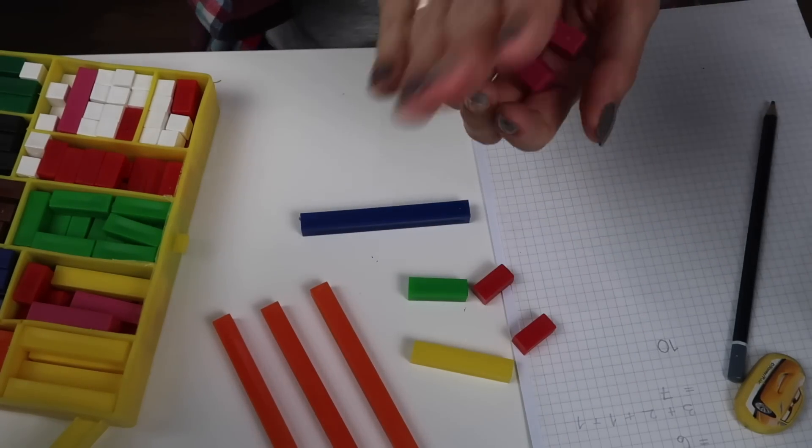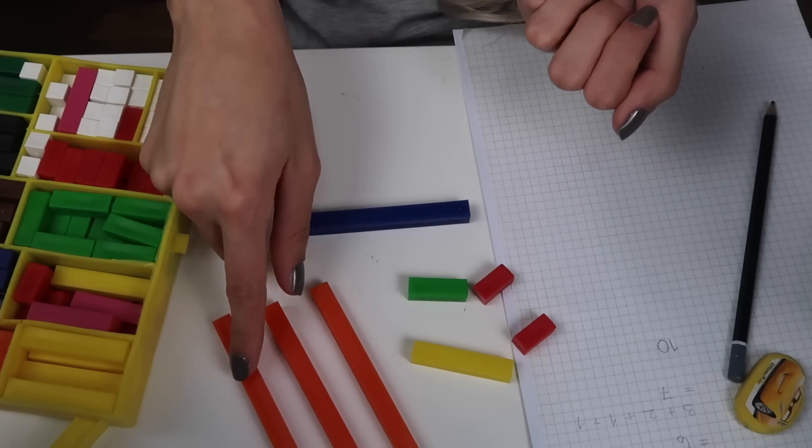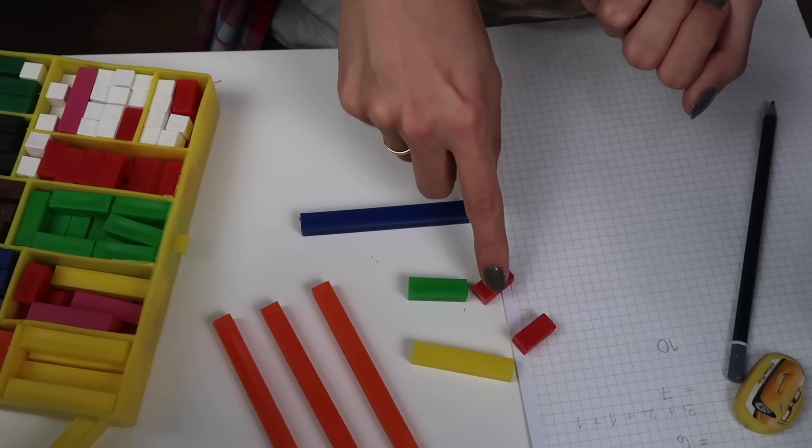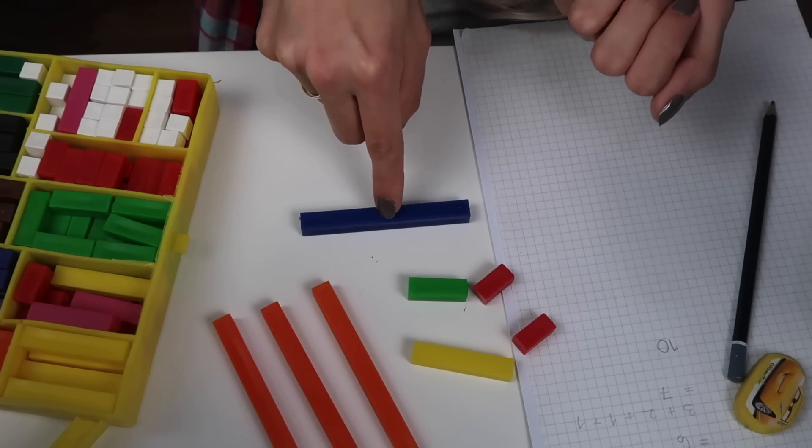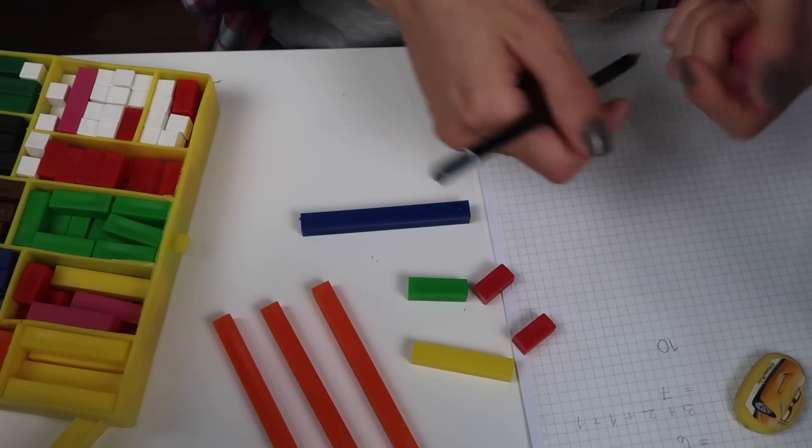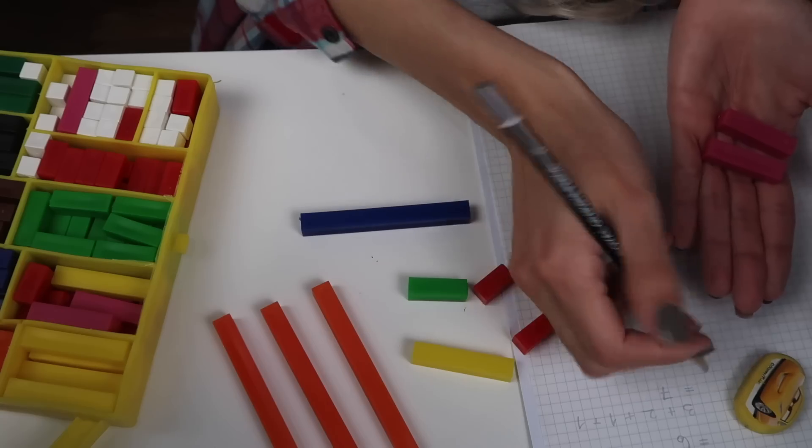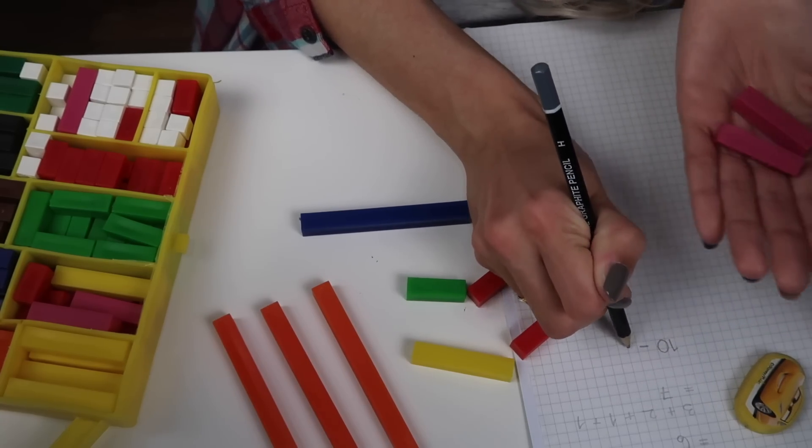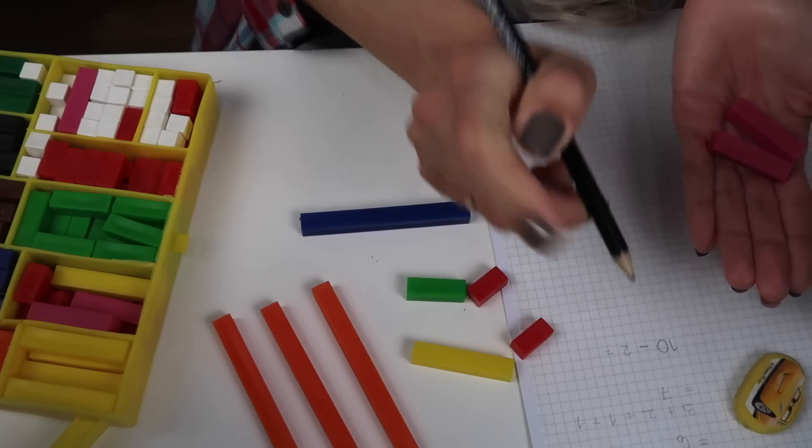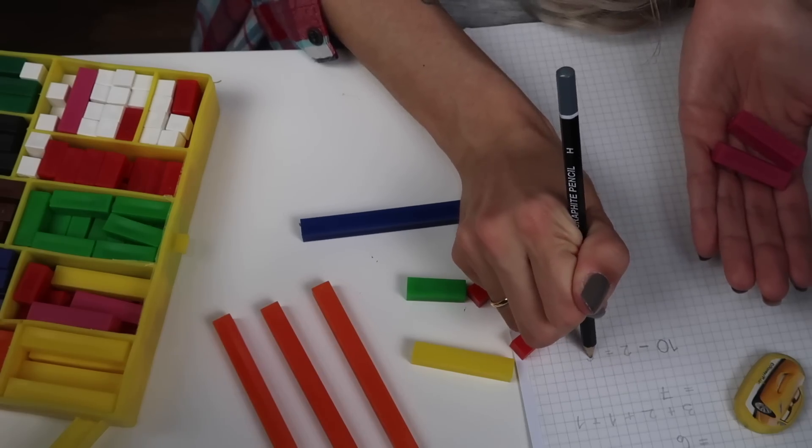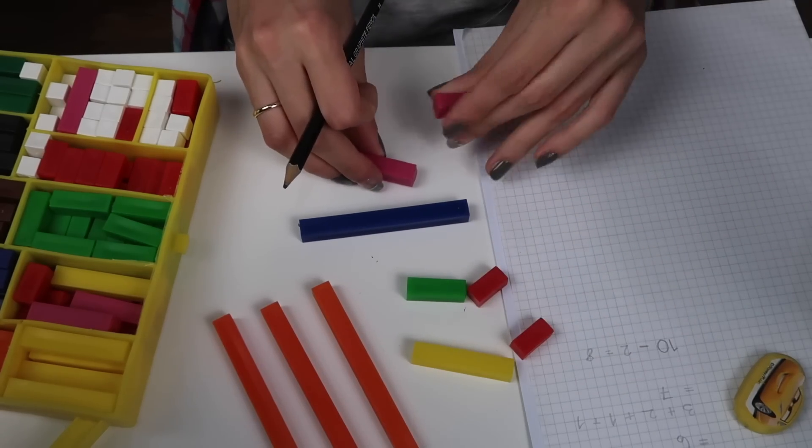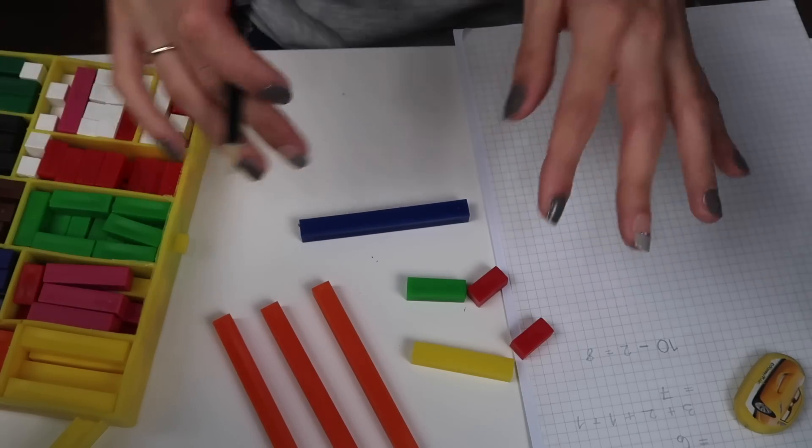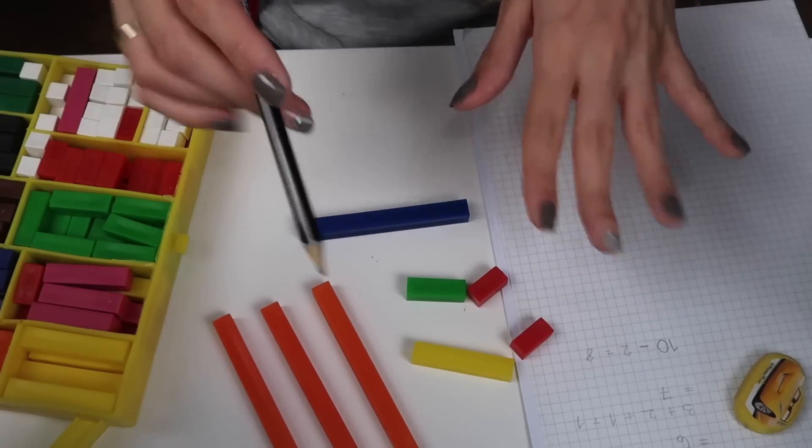I'll take them away. So, now let's count together. One, two, three, four, five, six, seven, eight. You see? So, we've got eight. So, ten minus, that means take away two. Equals. That's right. Eight. Good job. So, let's put these away. How many were there? Eight. Good.